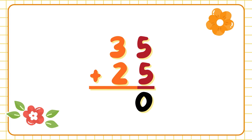Where would we put the one? The zero is at the bottom. And where would we put the one? At the top of three. So what is one plus three? That makes four. So what is four plus two? That equals six.